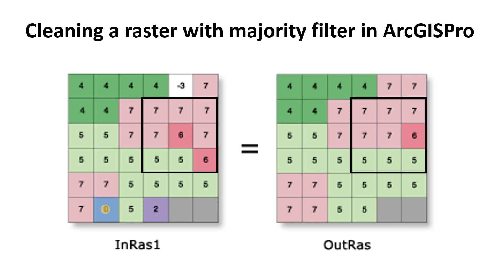That's exactly what the majority filter does. It uses a moving window, which we've discussed in previous videos. In this case it is always a three by three square window. It moves across the input raster, centers up on each pixel in turn, and does a computation to determine whether the center pixel should be reclassified. It looks at the neighboring pixels and determines what value makes up either more than half or the majority of those neighboring pixels — and we can set that.